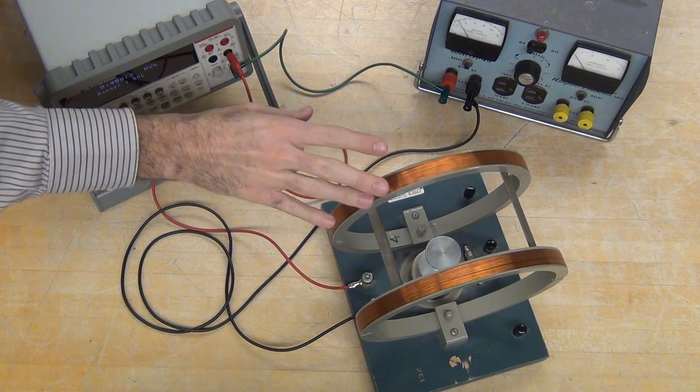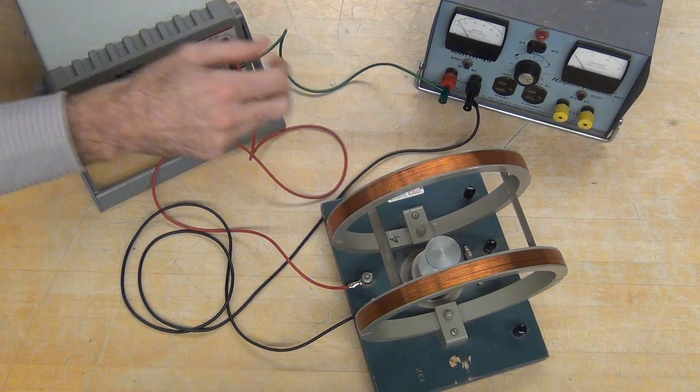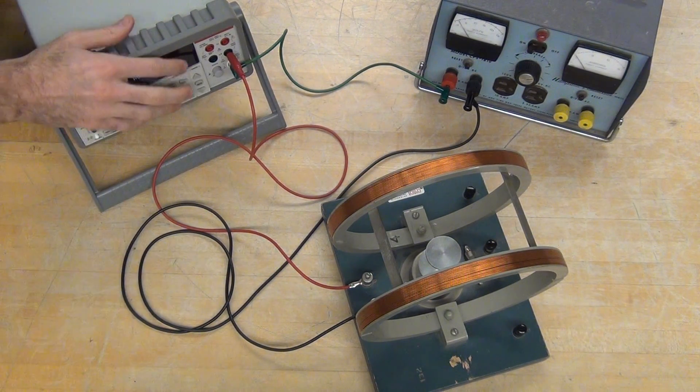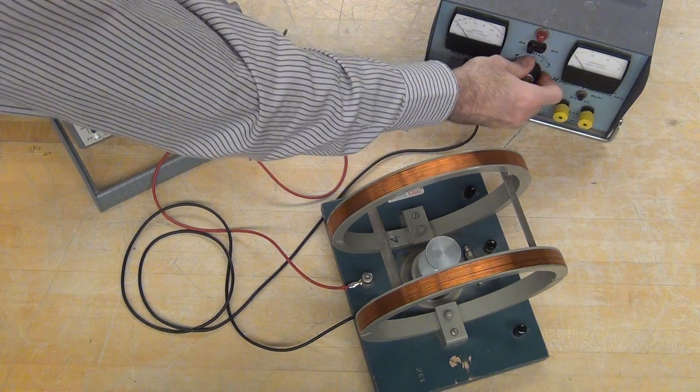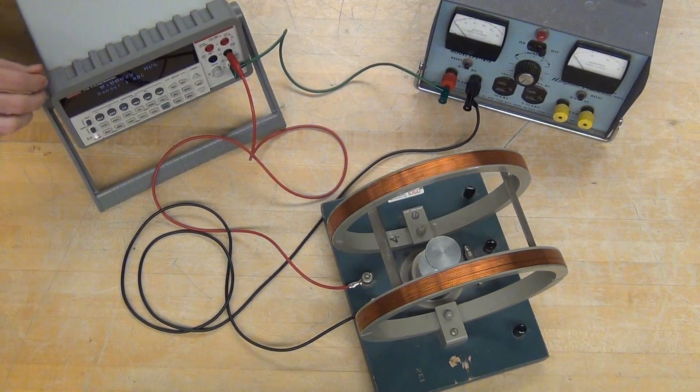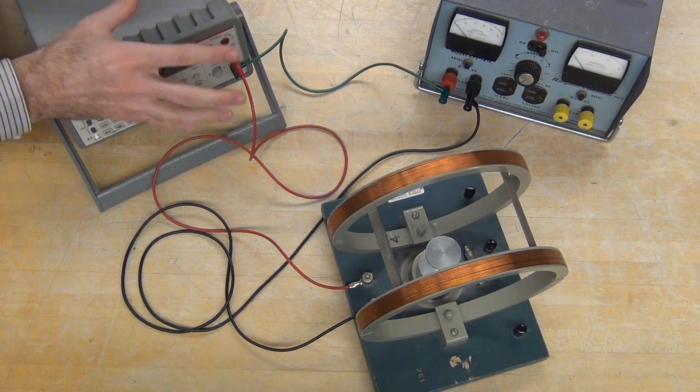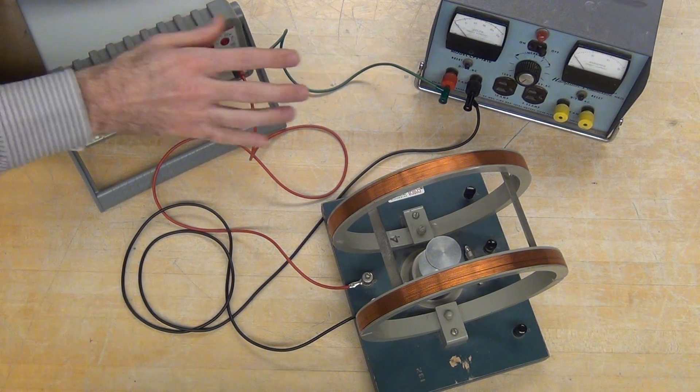Once we're done mapping the field of the coil, we're ready to start using the coil to measure the current. We'll turn everything down and off, and to have more fine control over the current that we're putting through, we're going to add in a voltage divider box.